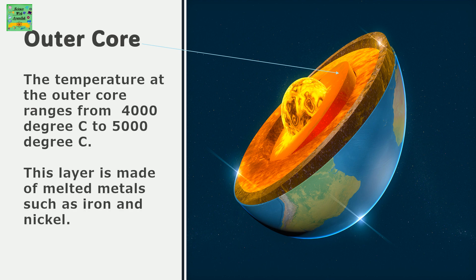Outer core. The temperature at the outer core ranges from 4000 degrees Celsius to 5000 degrees Celsius. This layer is made up of melted metals such as iron and nickel.